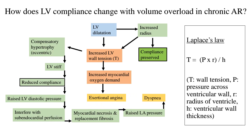Because of increased wall tension, the LV compensates by undergoing hypertrophy to increase wall thickness. However, this hypertrophy is eccentric — not the concentric hypertrophy seen in aortic stenosis — because myocardial fibers are laid down in series, not in parallel. This compensatory hypertrophy doesn't fully compensate for increased wall tension. Over time, the left ventricle becomes stiff, meaning the compliance of the LV finally starts reducing.